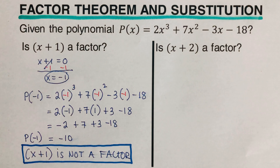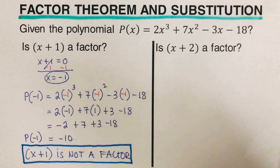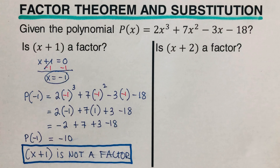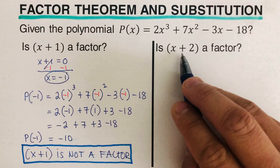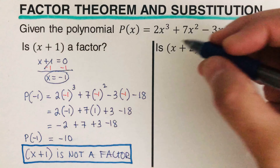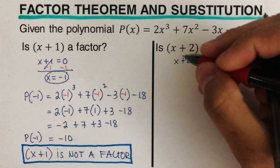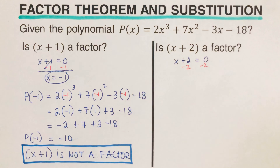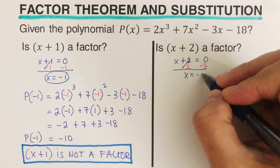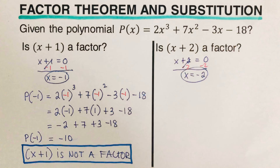At this time, I encourage you to pause this video and try this problem on your own, then check your answer. For the second example, we again use the zero product property: x plus two equals zero, so we subtract two from both sides, giving us x equals negative two. This is the value we plug into each of the x's.